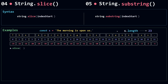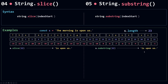If I call slice on string s with index 12, slice will take a slice starting from 12 to the end of the string. 12 is included, so we get 'is upon us' as the result. The same thing for substring — it starts from 12, inclusive, to the end of the string and returns the same result.